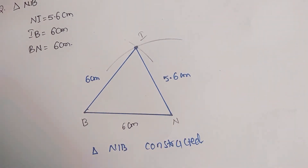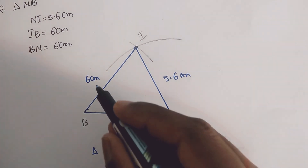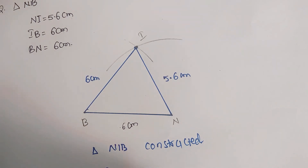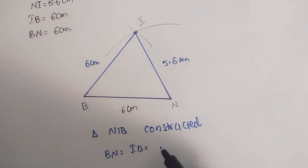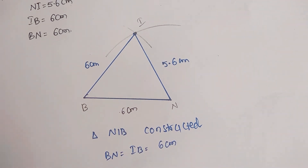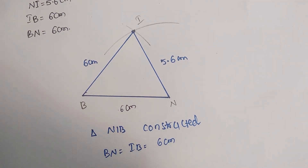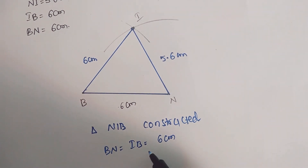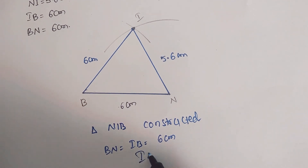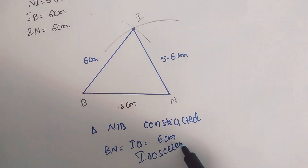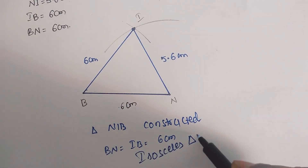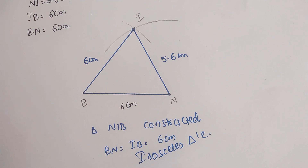Here, 6 centimeters — BN equals IB equals 6 centimeters. Since two sides are equal, this is an isosceles triangle. Thanks for watching this video — please subscribe if you haven't.